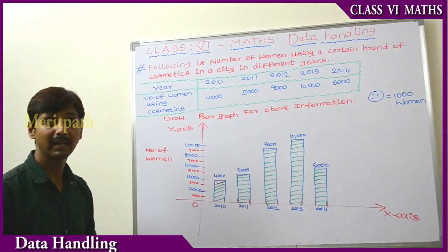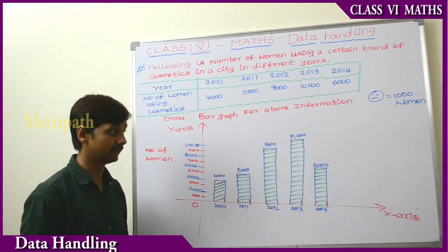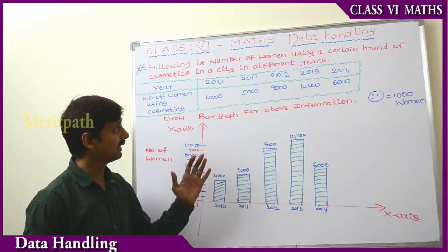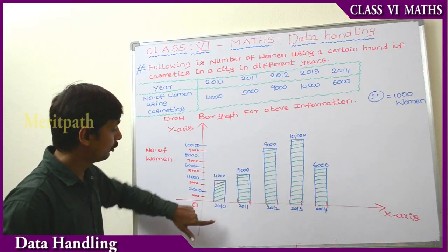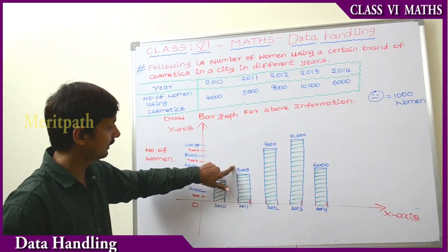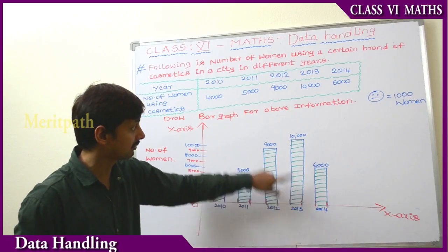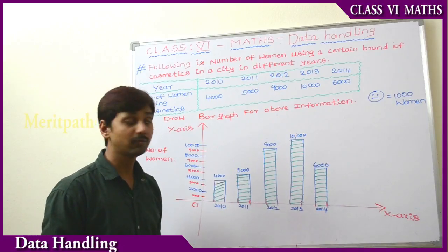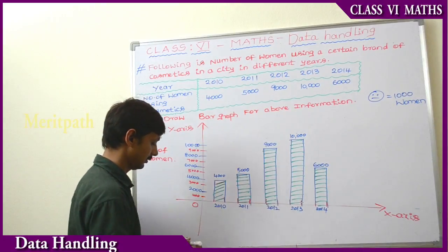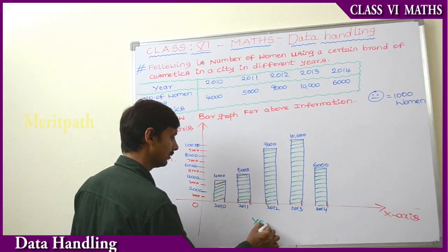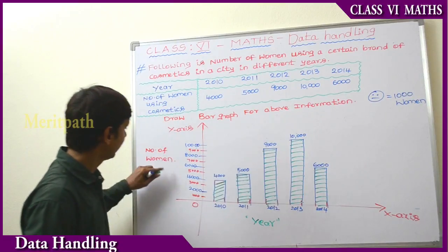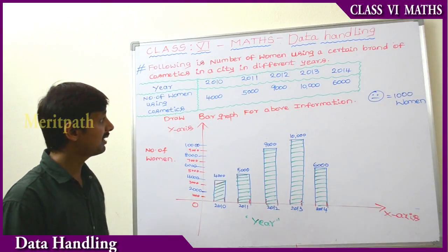So what we have understood: we have drawn all this information as rectangles — this is called a bar graph. To summarize: 2010 had 4,000 women, 2011 had 5,000, 2012 had 9,000, 2013 had 10,000, and 2014 had 6,000 women using cosmetics. The X axis shows the year and the Y axis shows the number of women — this is the bar graph.